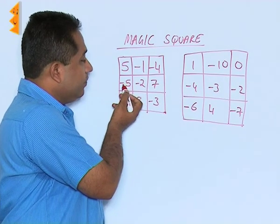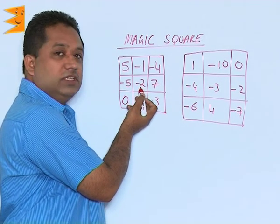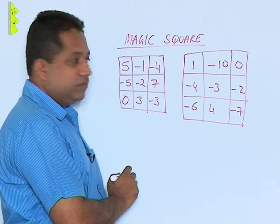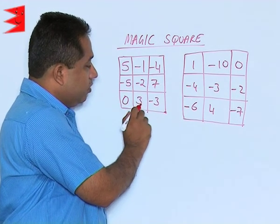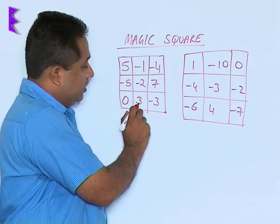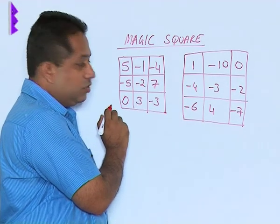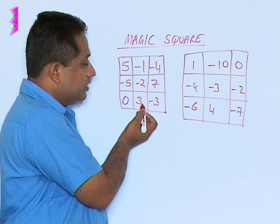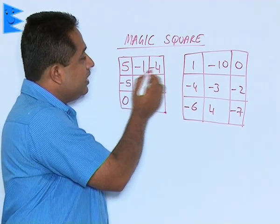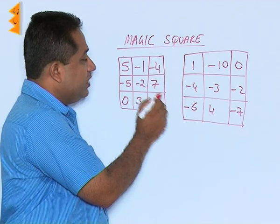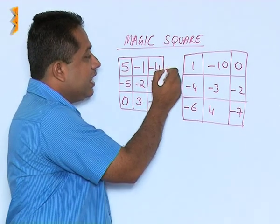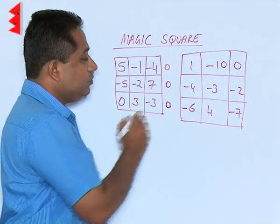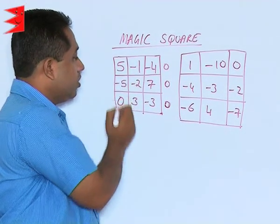What about the second row? Minus 5 and minus 2 gives us minus 7, and minus 7 plus 7 also gives us 0. What about the third row? 0 plus 3 is 3, and 3 minus 3 also gives us 0. So the total of this is also 0. We see that when we are adding each of these rows, we are getting an equivalent value, and that equivalent value in each case is 0.